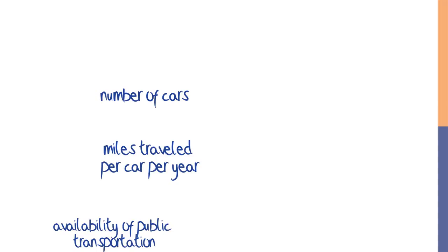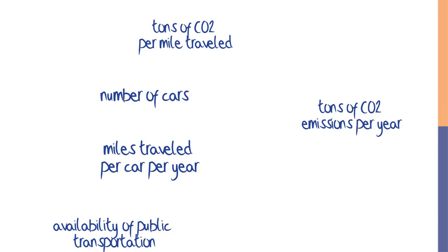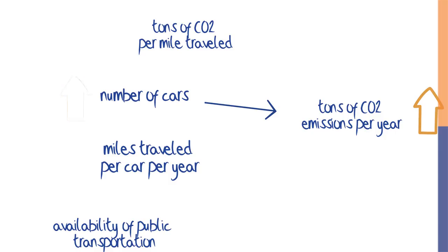The first part of a causal diagram are the words. You use words to represent the elements or variables in the system — for example, number of cars, miles traveled per car per year, availability of public transportation, tons of CO2 per mile traveled, and tons of CO2 emissions. Arrows show the causal relationships: an arrow from one variable to the next shows that a change in the first variable causes a change in the second. If the number of cars in a city increases, all else being equal, the tons of CO2 emissions will also increase. This type of causal relationship, where a change in the first variable creates a change in the second in the same direction, is marked with a plus sign.